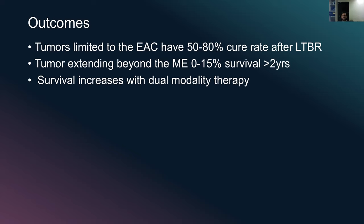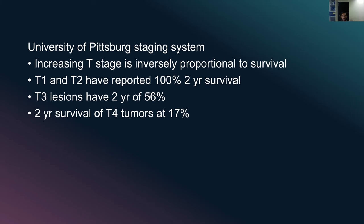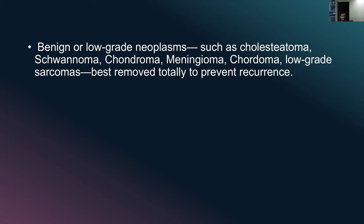Regarding outcomes: tumors limited to the external auditory canal have a 50 to 80% cure rate after lateral temporal bone resection. Tumors extending beyond the middle ear have 0 to 15% survival after two years, though survival increases with dual modality therapy. In the University of Pittsburgh staging system, increasing T stage is inversely proportional to survival: T1 and T2 have reported 100% two-year survival, T3 lesions have 56% two-year survival and T4 tumors have 17% two-year survival. Benign or low-grade neoplasms such as cholesteatoma, schwannoma, chordoma and meningioma should be removed totally to prevent recurrence.